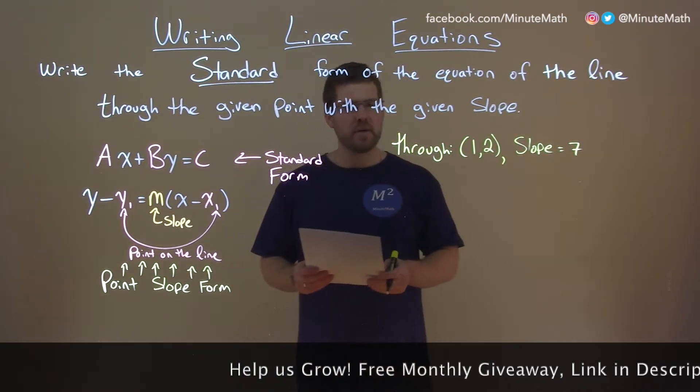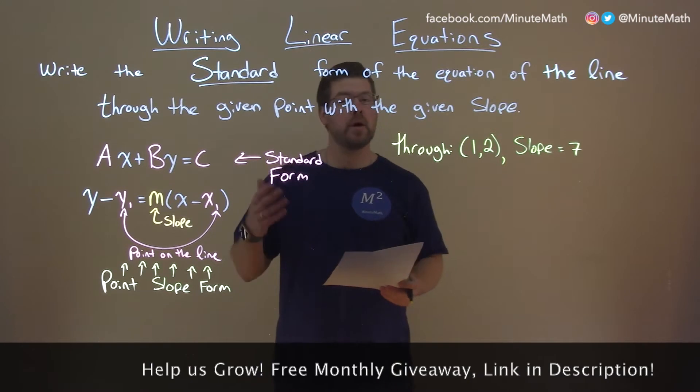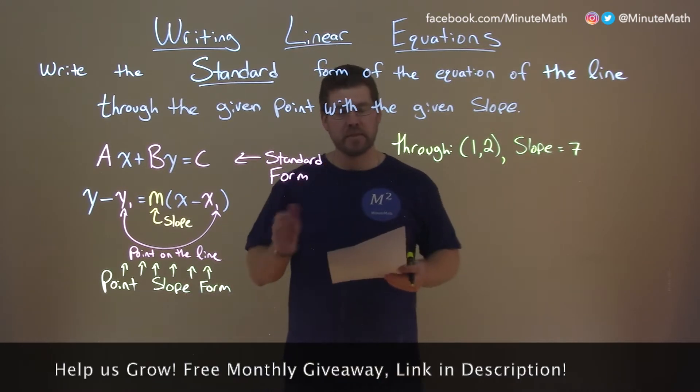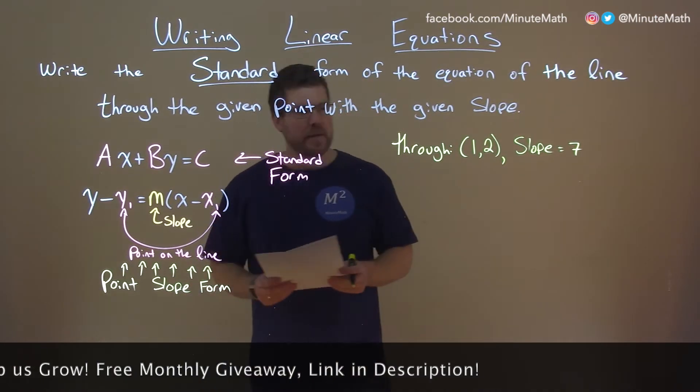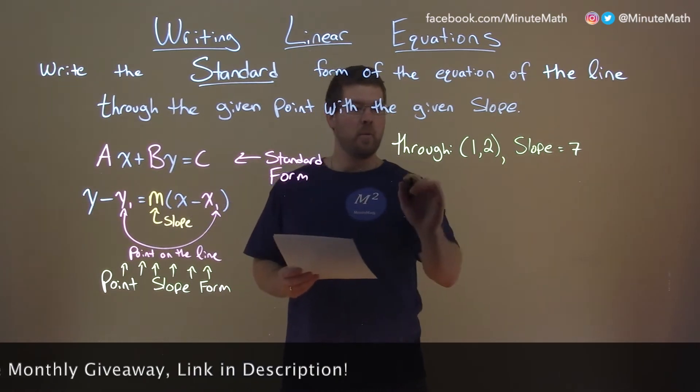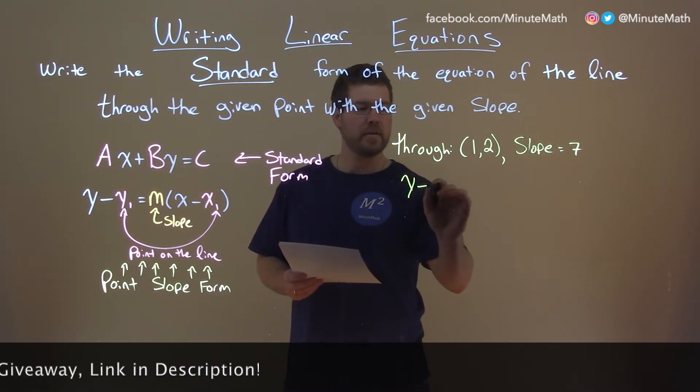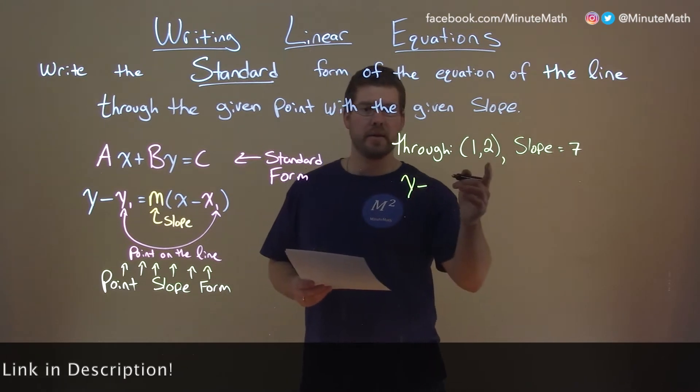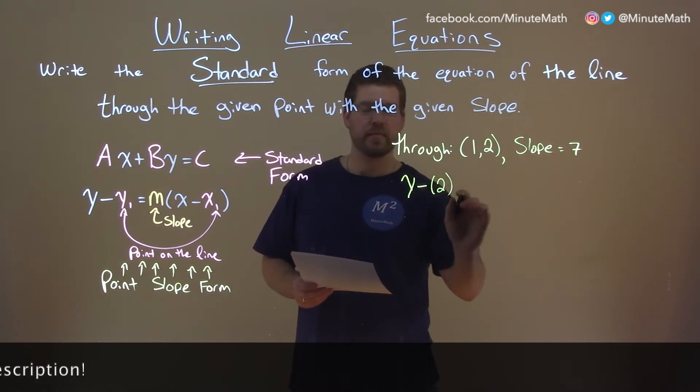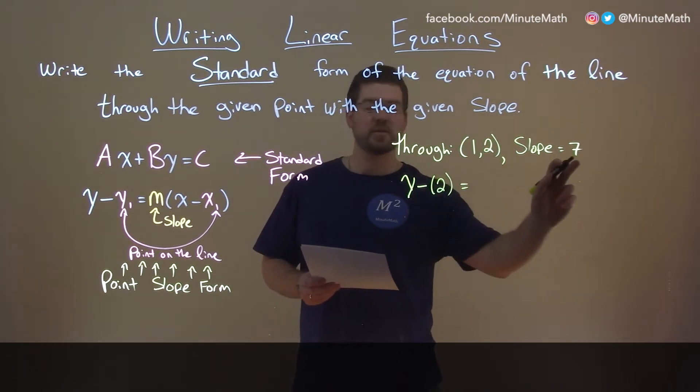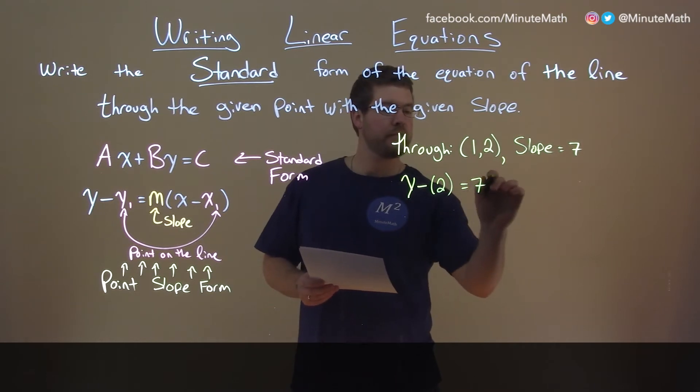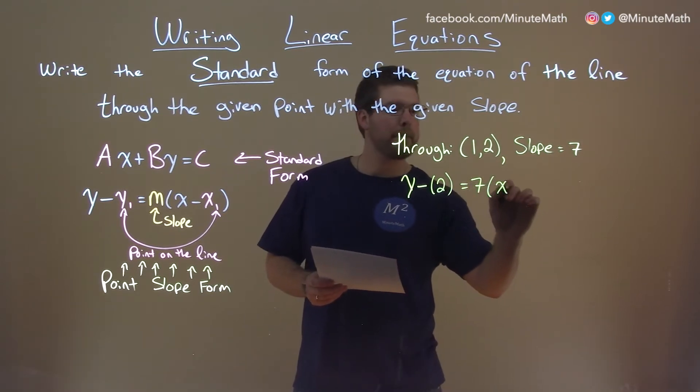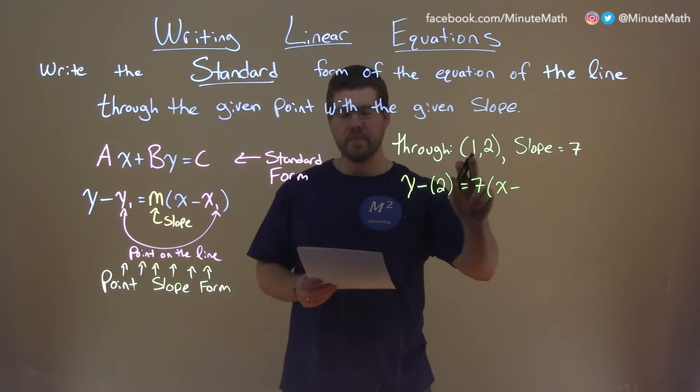Well, the first step really to do that is to kind of write it in point-slope form and adapt. So, point-slope form here, we have y minus, and we want the y-coordinate here. So, that's a 2. Then that's equal to my slope, 7, and then we have x minus the x-coordinate of the point, which is 1.